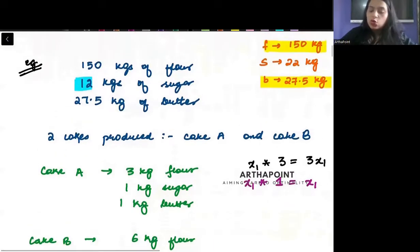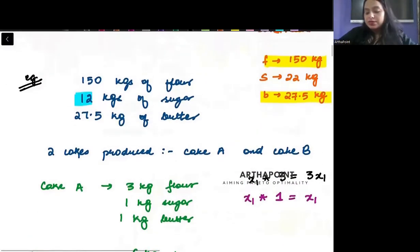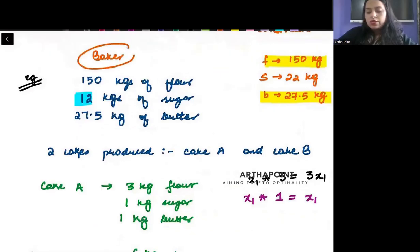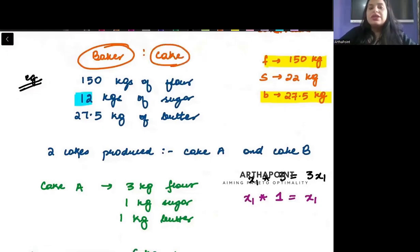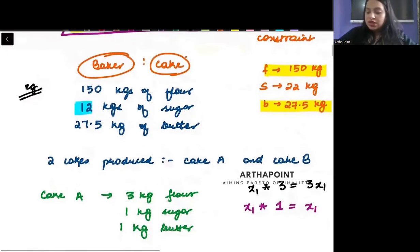What this example is saying is, look here, there is a baker who wants to make cakes. He makes two kinds of cakes, cake A and cake B.